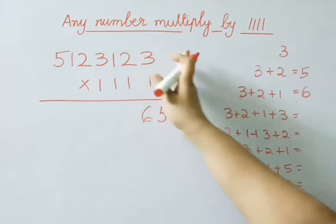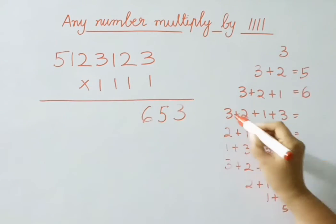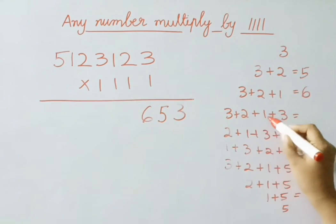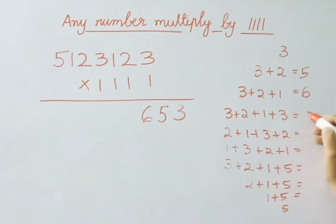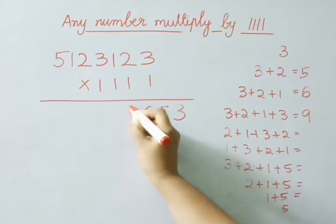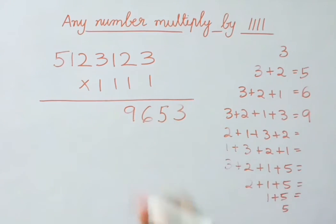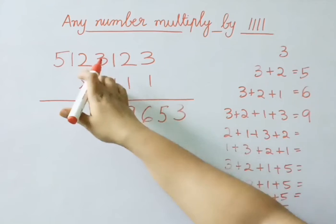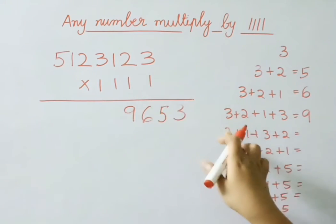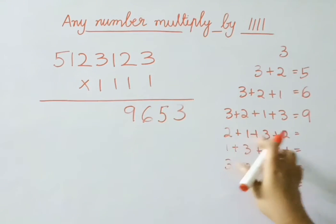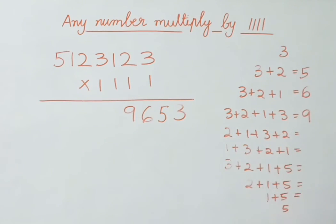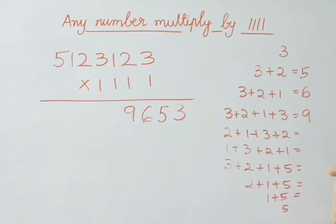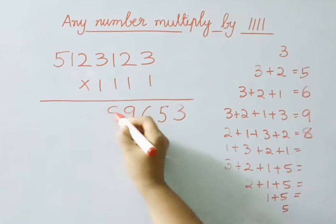Next 4 digits from right to left: 3 plus 2 is 5, 5 plus 1 is 6, 6 plus 3 is 9. Write the answer here. Next leave 1 digit, then add 4 digits: 2 plus 1 is 3, 3 plus 3 is 6, 6 plus 2 is 8. Write the answer: 8.